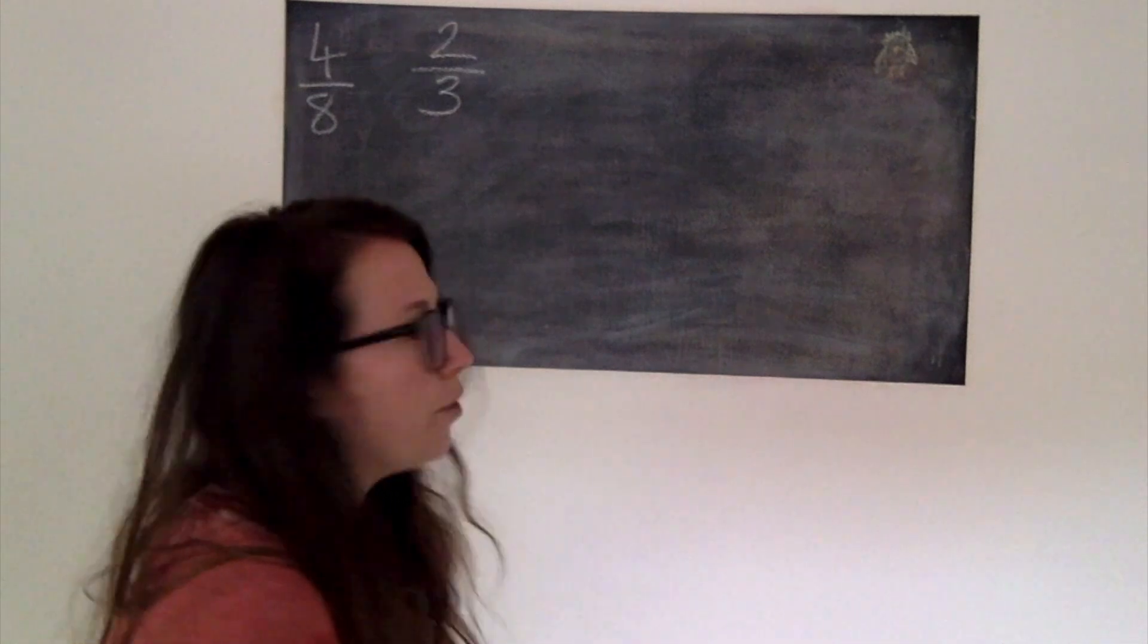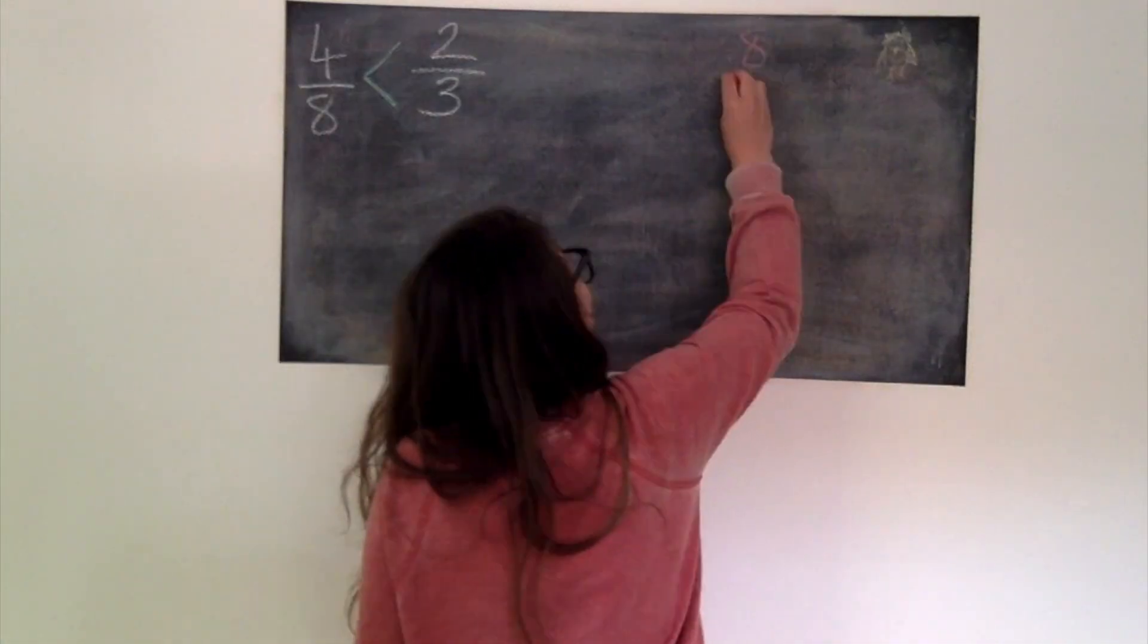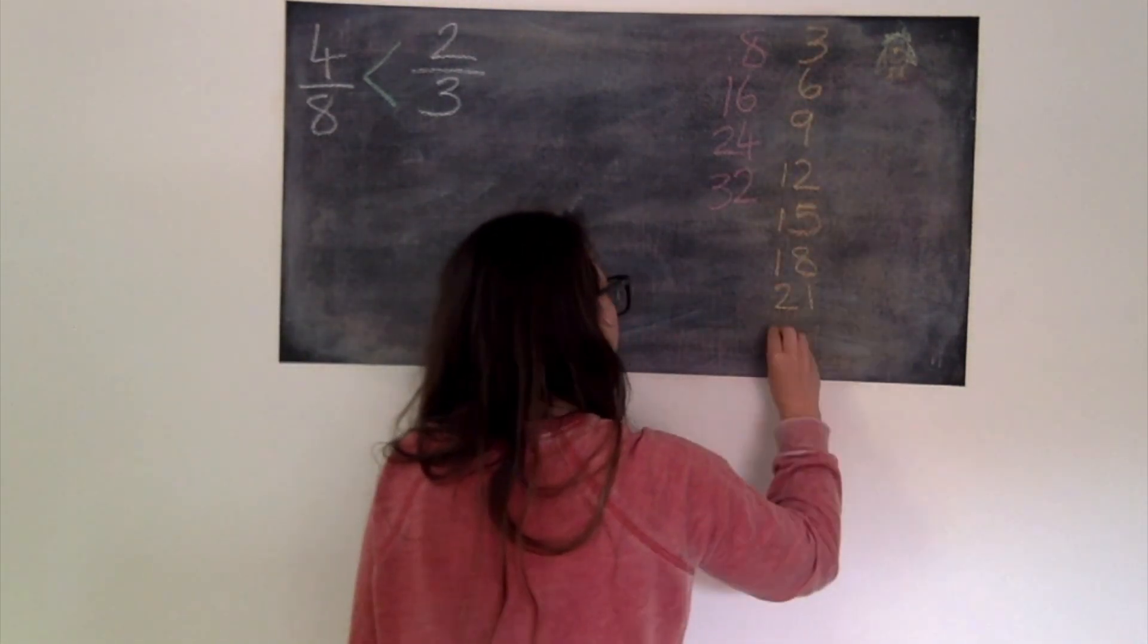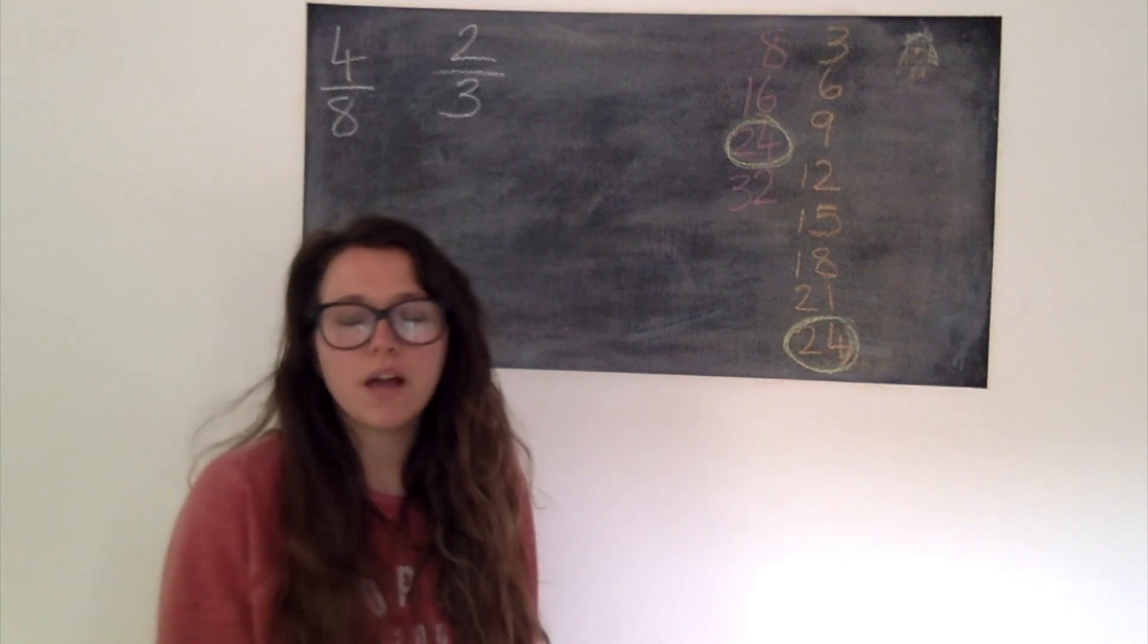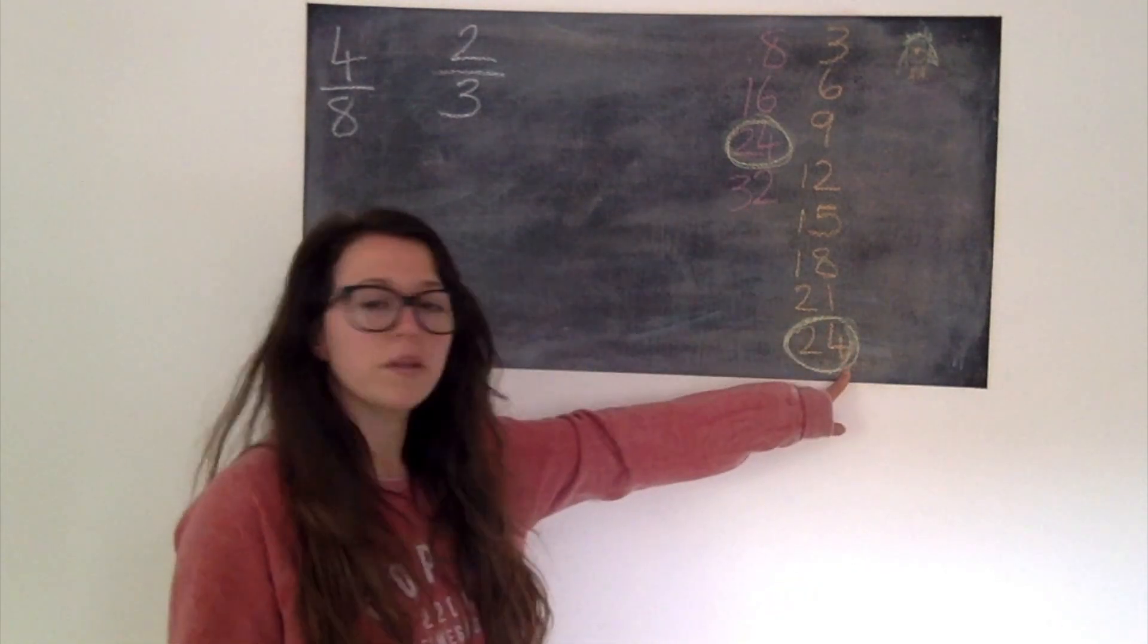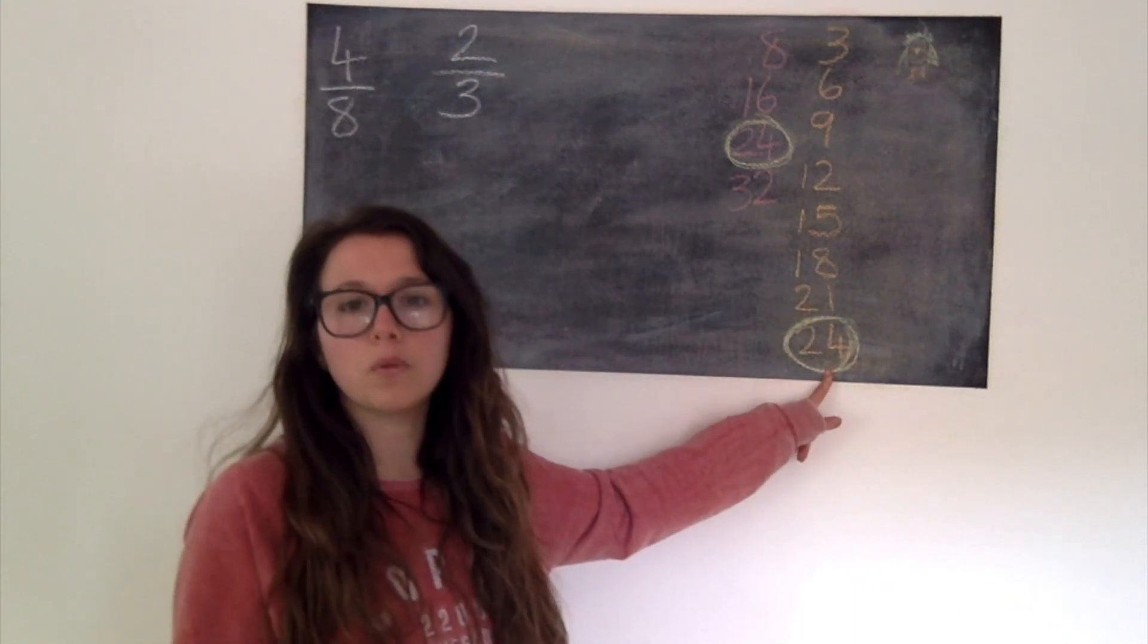To do that I'm going to write out my multiples of 8 and my multiples of 3. Once you've done that hopefully you'll spot that there is a number that's in both the 8 times table and the 3 times table and I've circled it. It's 24. So we call this our lowest common multiple.